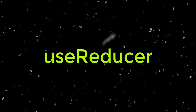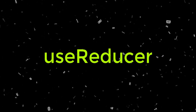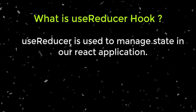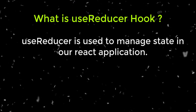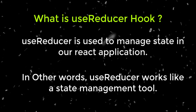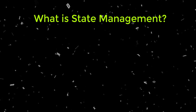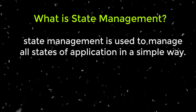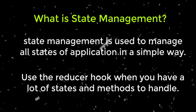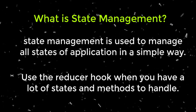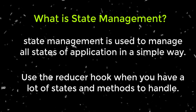This video is about the useReducer hook. The useReducer hook is used to manage state in a React application — in other words, it works like a state management tool. State management is used to manage all states of an application in a simple way. We use useReducer whenever we need to manage a lot of states and methods.